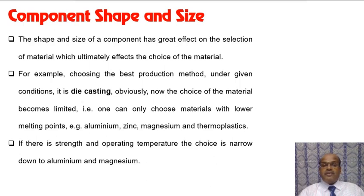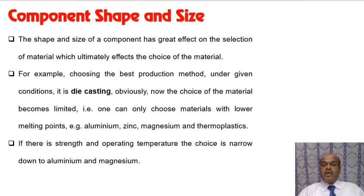Component shape and size has a greater effect on material selection. For example, choosing die casting as the production method means selecting a material with a lower melting point — such as aluminium, zinc, magnesium, or thermoplastic. If strength and operating temperature are priorities, zinc and thermoplastic can be eliminated since aluminium and magnesium have higher strength and higher operating temperature.